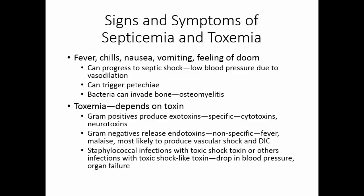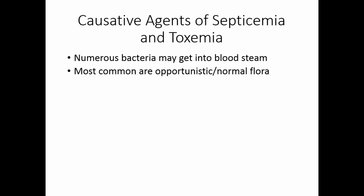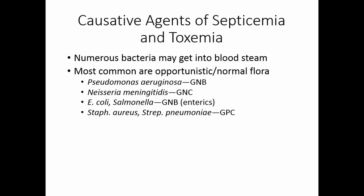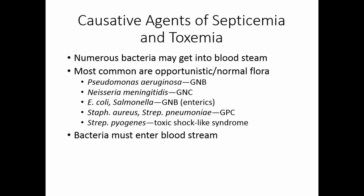Staphylococcal infections can release toxic shock toxin, and other organisms can produce toxic shock-like toxin. Both lead to a drop in blood pressure and organ failure. The most common bacteria causing septicemia or toxemia are opportunistic organisms and normal flora: Pseudomonas aeruginosa (a gram-negative bacillus), Neisseria meningitidis (a gram-negative coccus), E. coli and Salmonella (gram-negative bacilli from the intestine), Staphylococcus aureus, Streptococcus pneumoniae (gram-positive cocci), and Streptococcus pyogenes, which can cause toxic shock-like syndrome and is also a gram-positive coccus.